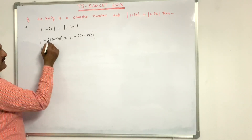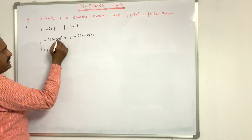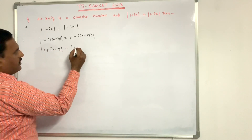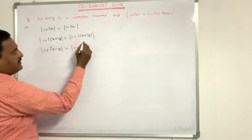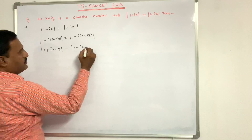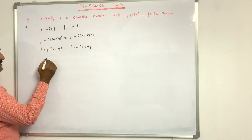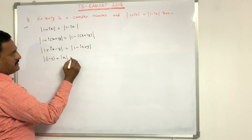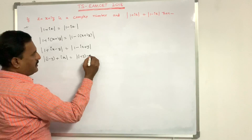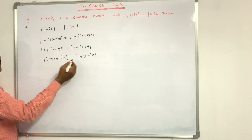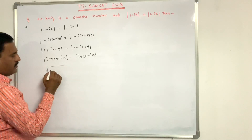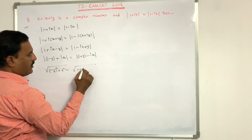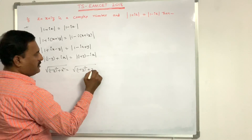Expanding: modulus of (1 + i)(x + iy) = modulus of (x + ix + i²y) = modulus of (1 - y + ix). Equals modulus of (1 - i)(x + iy) = modulus of (1 + y - ix). Applying modulus on both sides: √((1 - y)² + x²) = √((1 + y)² + x²).